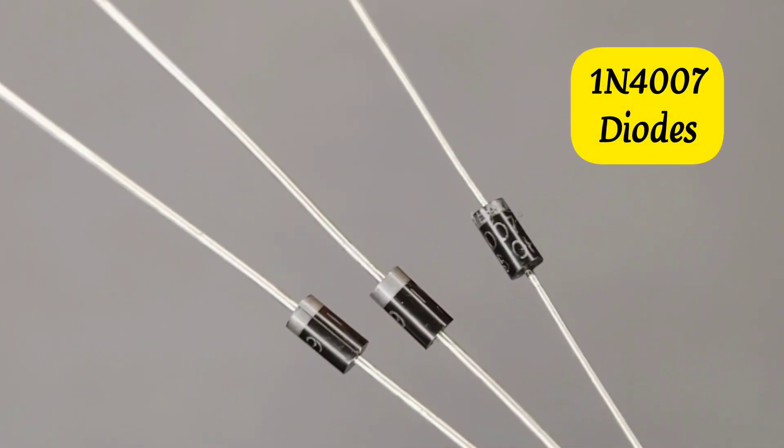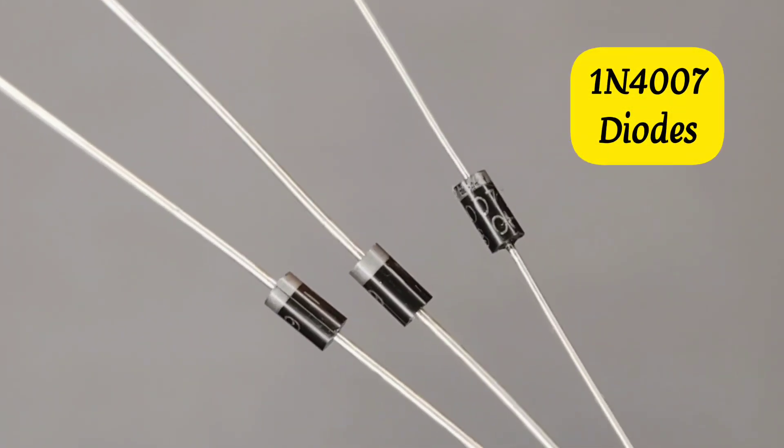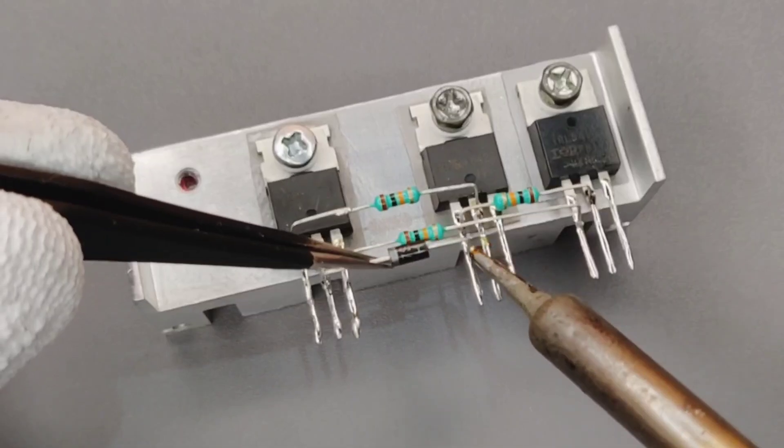Also take 3 pieces of 1N4007 diodes and solder across the MOSFETs as shown.